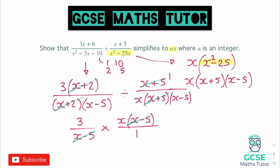On the numerators we have 3 times x, which gives us 3x. On the denominators we have 1 times 1, which is just 1. Since it's 1 on the bottom we can remove it, and we're left with 3x as our final answer for this algebraic fraction calculation.